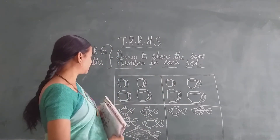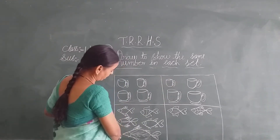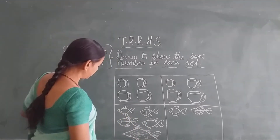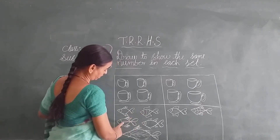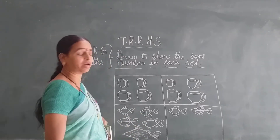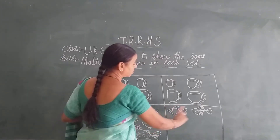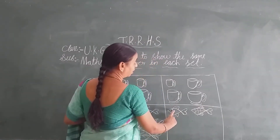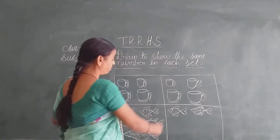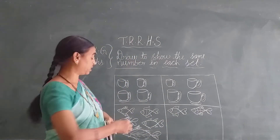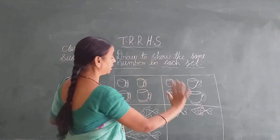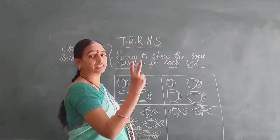Okay, now next — in the next box, look at here. Here we have pictures of fishes. Look at here: 1, 2, 3, 4 and 5. How many are there? 5 fishes in this box. Here in this box, how many are there? 1 and 2. To make this same, we have to draw more pictures. In the first box we have 5 pictures, here we have only 2 pictures.